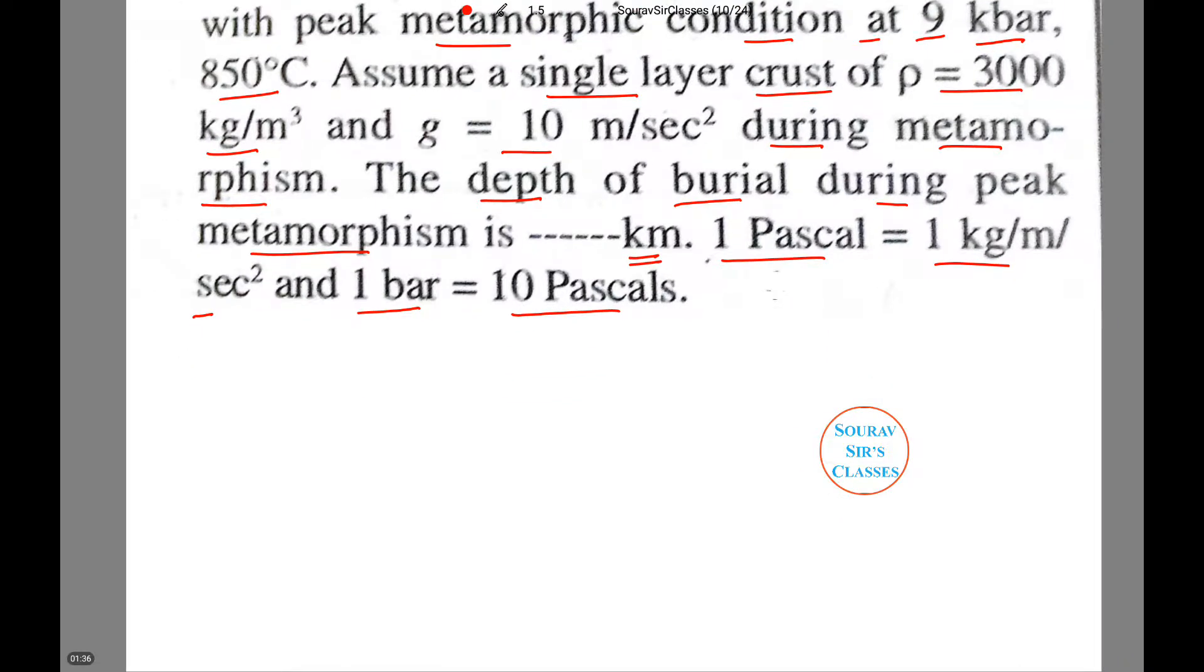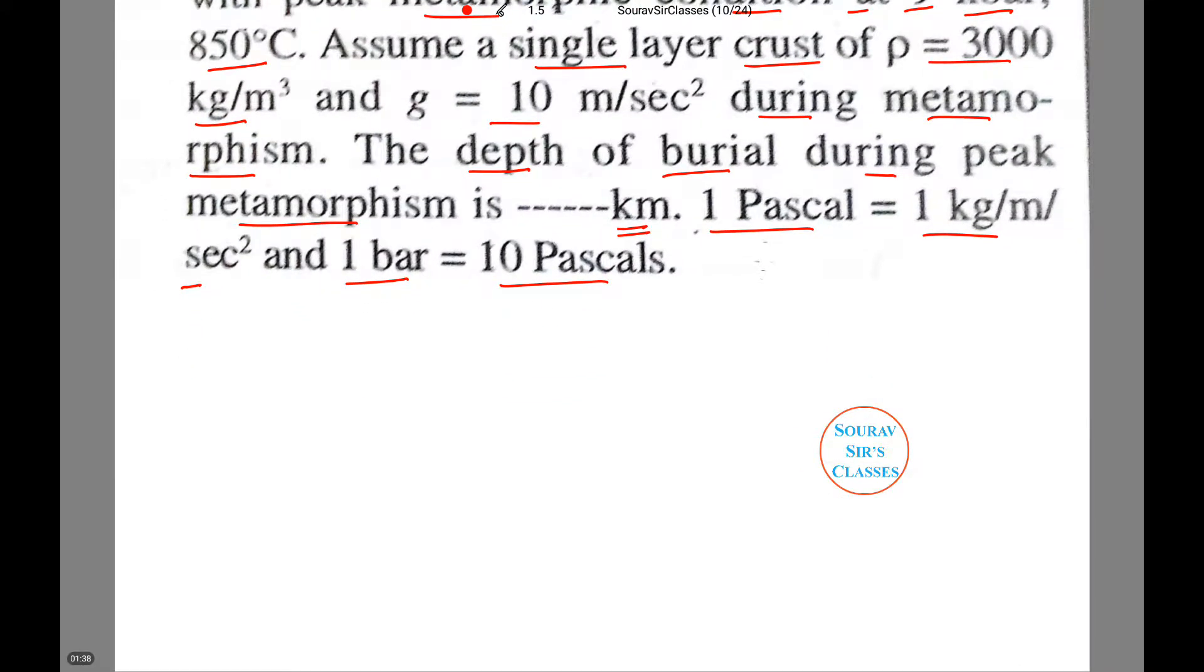So let us write down first what the information we have from this question. Your P is equal to 9 kbar, T is equal to 850 degrees Celsius. Now assuming a layer crust.